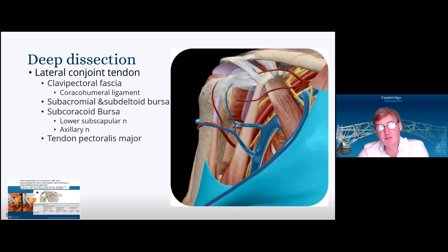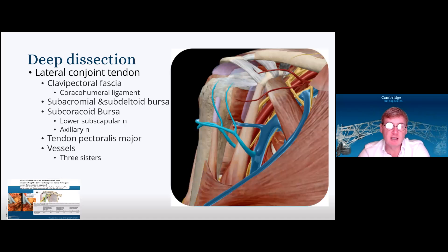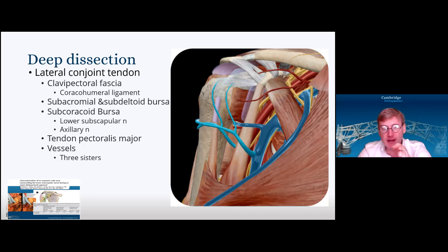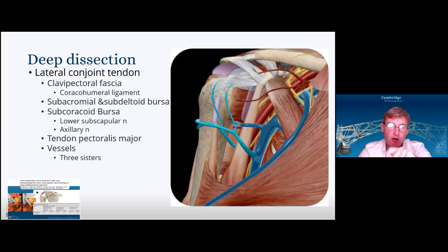As for the tendon of pectoralis major, it's very seldom that I incise it. If you need more access, you can incise up to one-third or two-thirds of pec major as long as you repair it. The anterior circumflex humeral vessels are normally three sisters — two veins and the artery. For primary arthroplasty I generally don't need to get down to the three sisters and only deal with them if I need to. Some people will go there right from the start and deal with them, either cauterizing or tying them off.